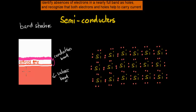Now there's a dot point we have to talk about — something quite important. One of the concepts you definitely need to understand to appreciate semiconductors: identify the absence of electrons in a nearly full band as holes. So in a nearly full band — for example, in a semiconductor — we identify the absence of electrons as holes, and we recognize that both electrons and holes help to carry current.